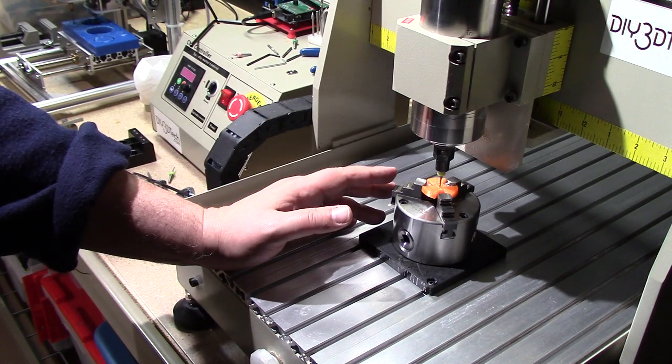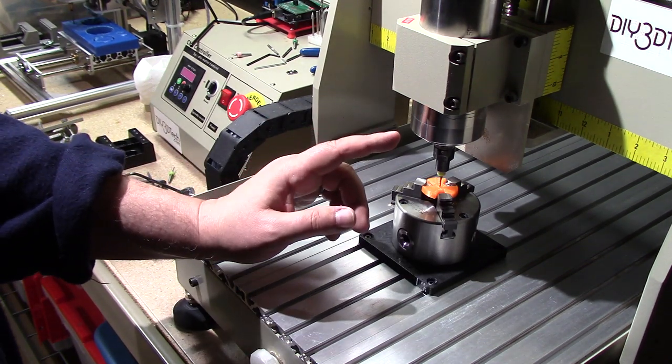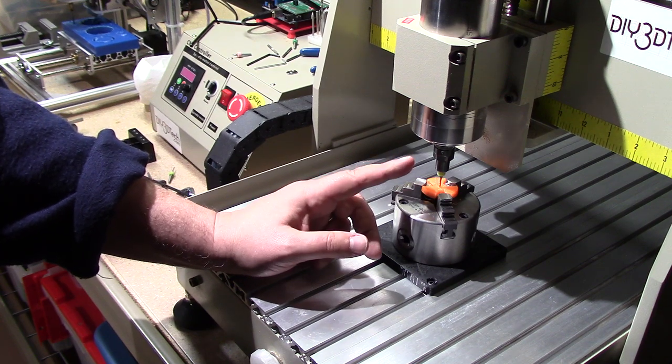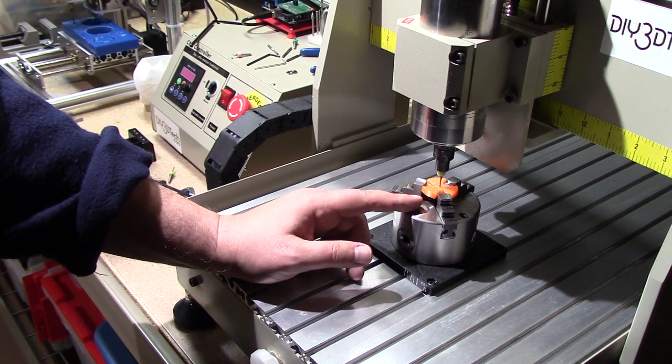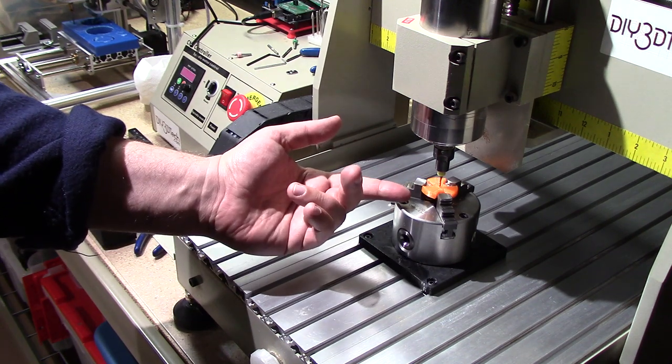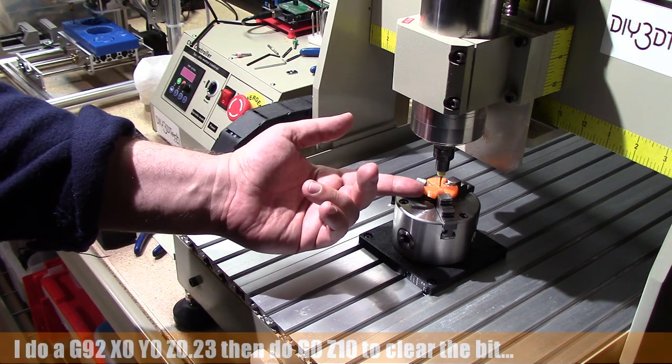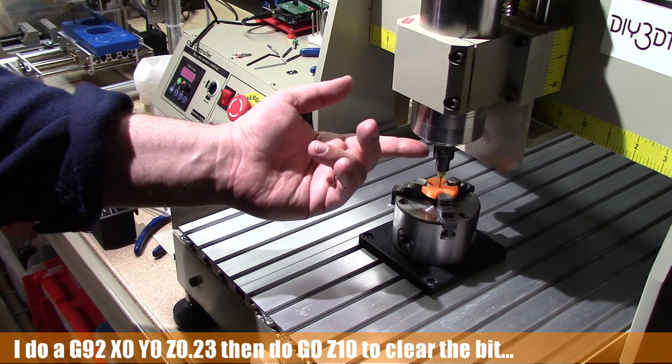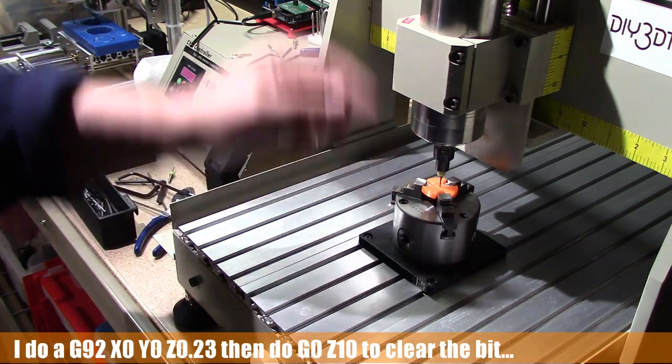So now what I can do is go into my g-code control program or my g-code sending program and I can set my home position here and then just send a G0 Z10 to lift up the spindle and then remove my jig or my fixture.